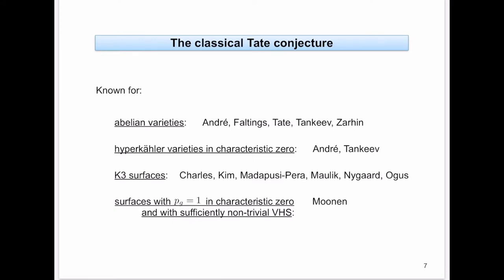It's also known for hyperkähler varieties in characteristic zero by work of André and Tankeev, and for K3 surfaces by quite a number of people over finite fields: Nygaard-Ogus, then later Maulik, Madapusi Pera, François-Charles. Moreover, for surfaces with p_g equal to one and characteristic zero, under the assumption of a sufficiently non-trivial variation of Hodge structures, it has been established by Ben-Moonen.